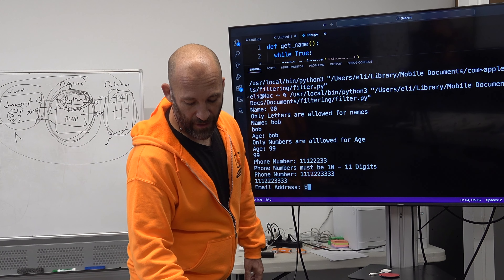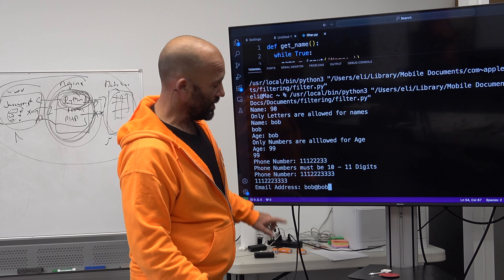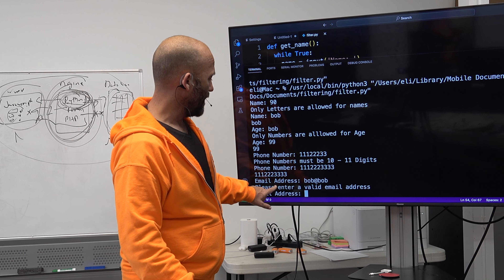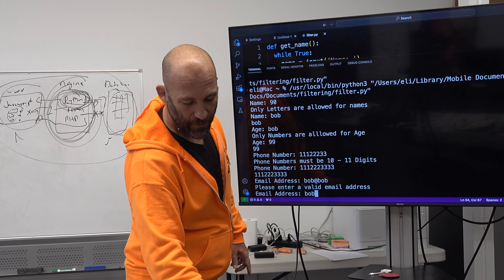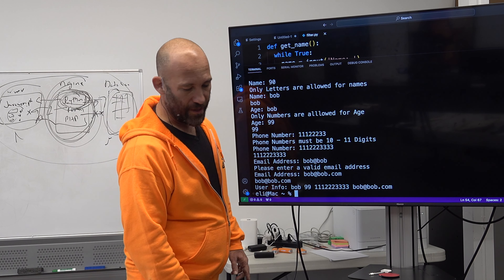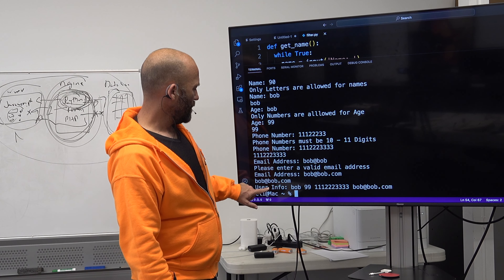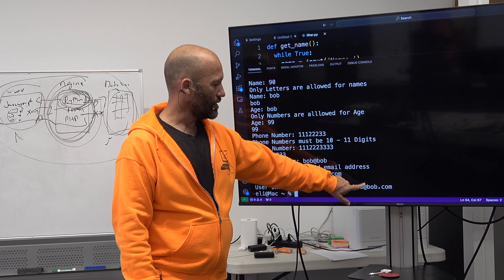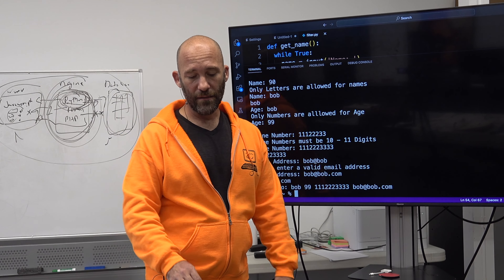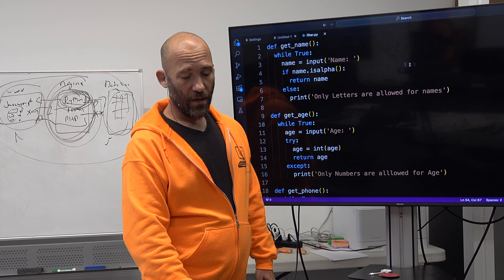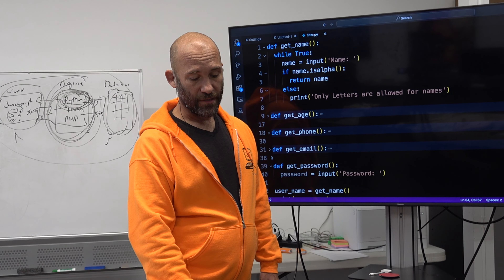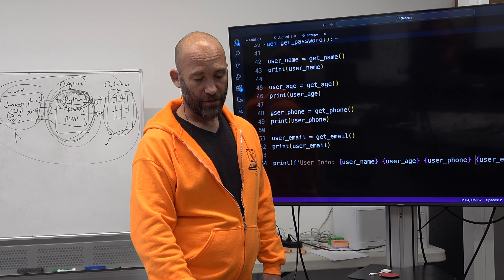Then if I try to do 'Bob at Bob' for my email address, that's not going to work — it says 'enter a valid email address.' So Bob at Bob.com — I do that and we get Bob at Bob.com. User info: Bob, 99, the phone number, Bob at Bob.com. And so that's what the filtering process is: when I put in data that is wrong, it kicks me back and says please give me the information that I actually want.